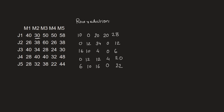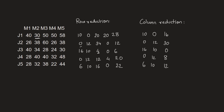In the next step we do column reduction, subtracting the minimum of each column from every element. The first column minimum is 0, so it remains: 10, 0, 16, 0, 6. The second column minimum is also 0, so it remains the same. The third column minimum is 4, so subtracting 4 gives: 16, 30, 0, 8, 12. The fourth column minimum is 0, giving: 20, 0, 0, 4, 0. The fifth column minimum is 6, giving: 22, 6, 0, 14, 16.